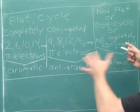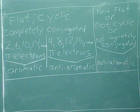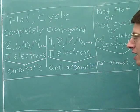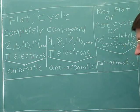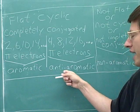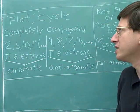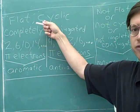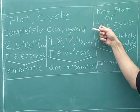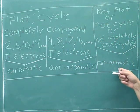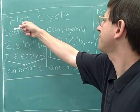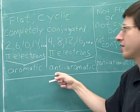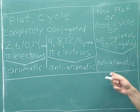I've put on the board the basic rules for determining what category a molecule falls into. One thing to notice is that in order to be either aromatic or anti-aromatic, you've got to be cyclic — that is, you have to form a ring. Anything that is not cyclic is just a normal non-aromatic compound. Also, you have to be flat to be in either of those two categories. If you're not flat, you're non-aromatic.